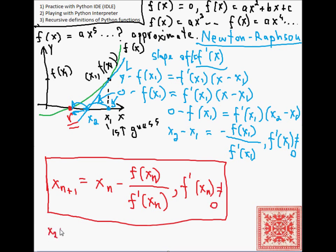Assuming that the derivative, the value of derivative of xn is not equal to 0. So, here's an example.